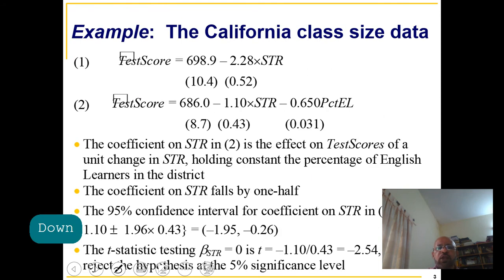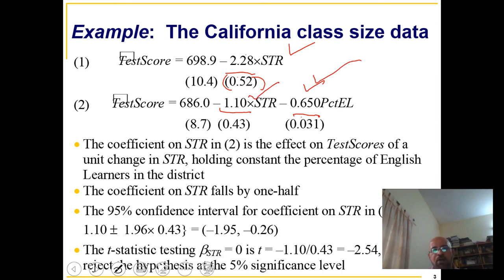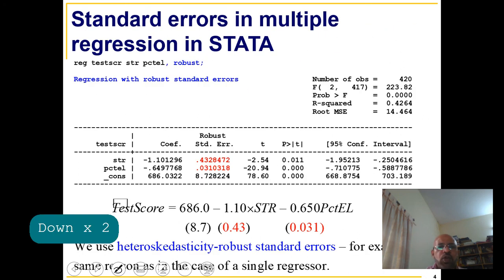For example, beta_1 hat divided by its standard error, or each coefficient divided by its standard error. We can see that we can reject these statistics, meaning these coefficients are individually significant. Our main topic in this video is joint hypothesis testing.